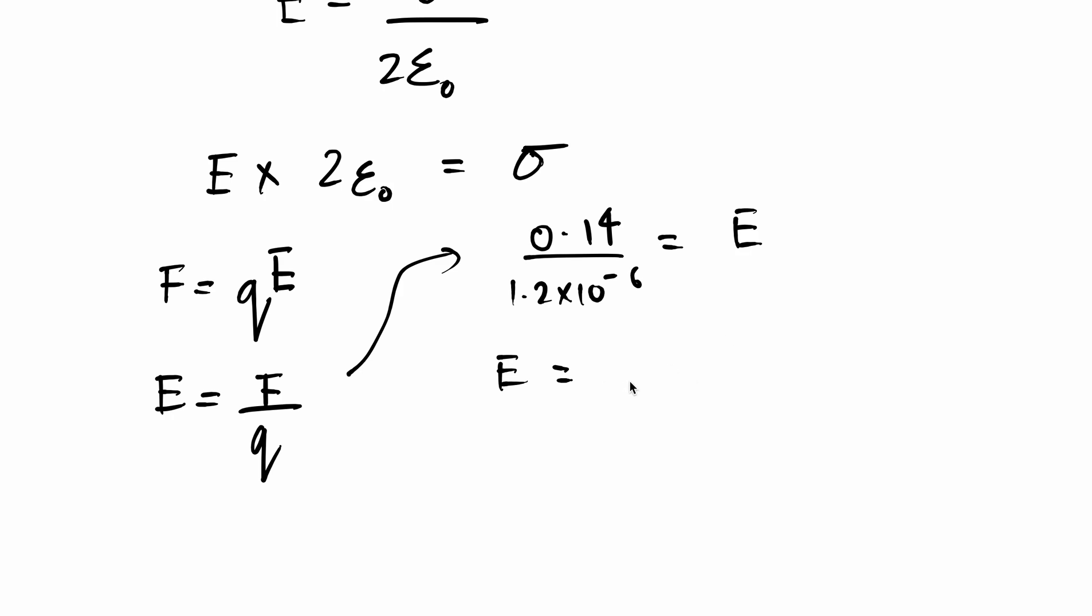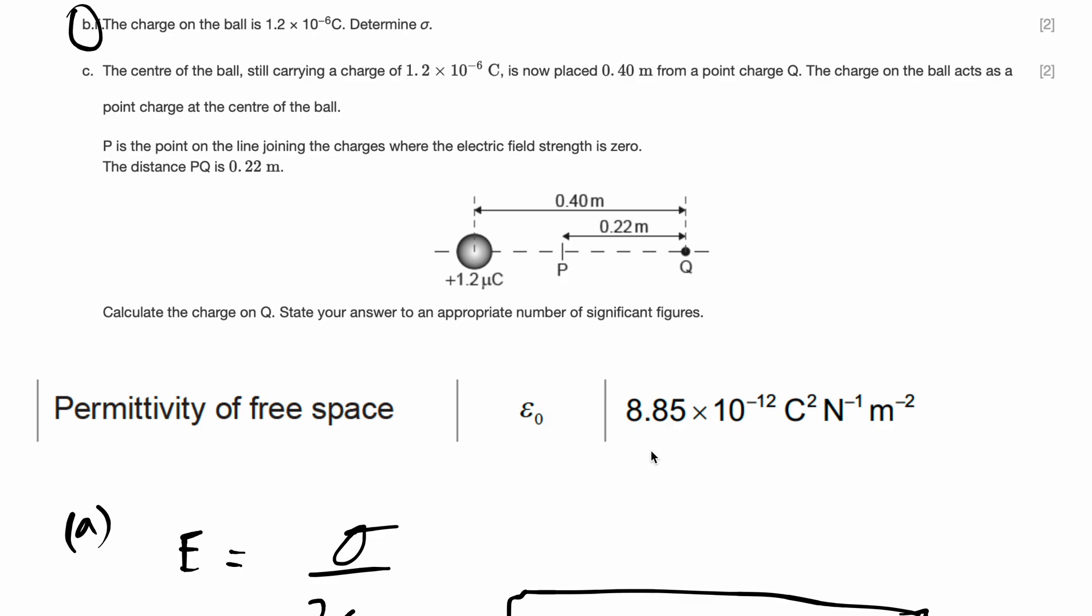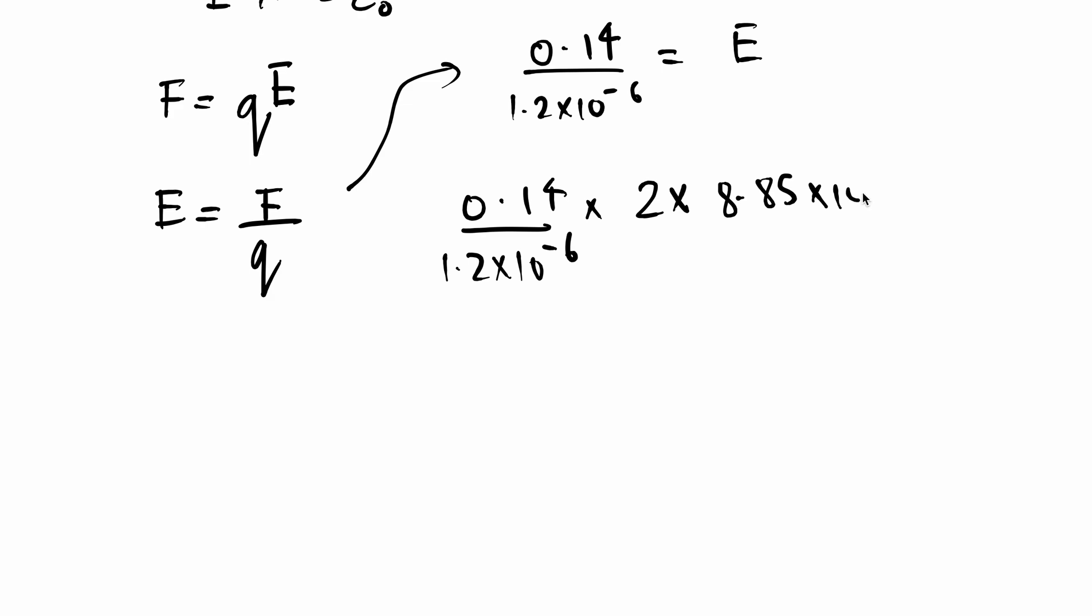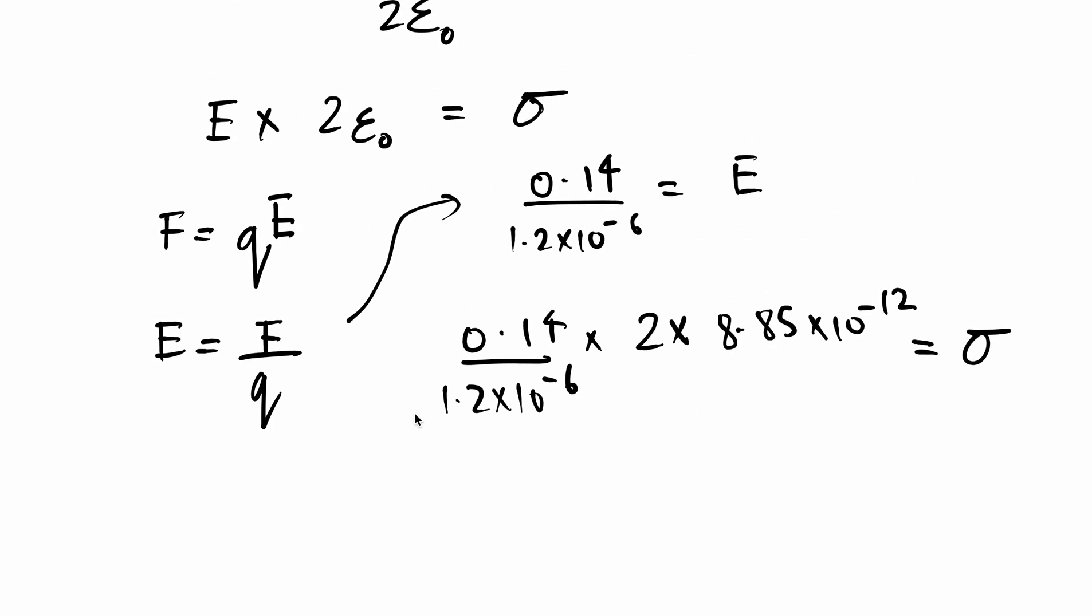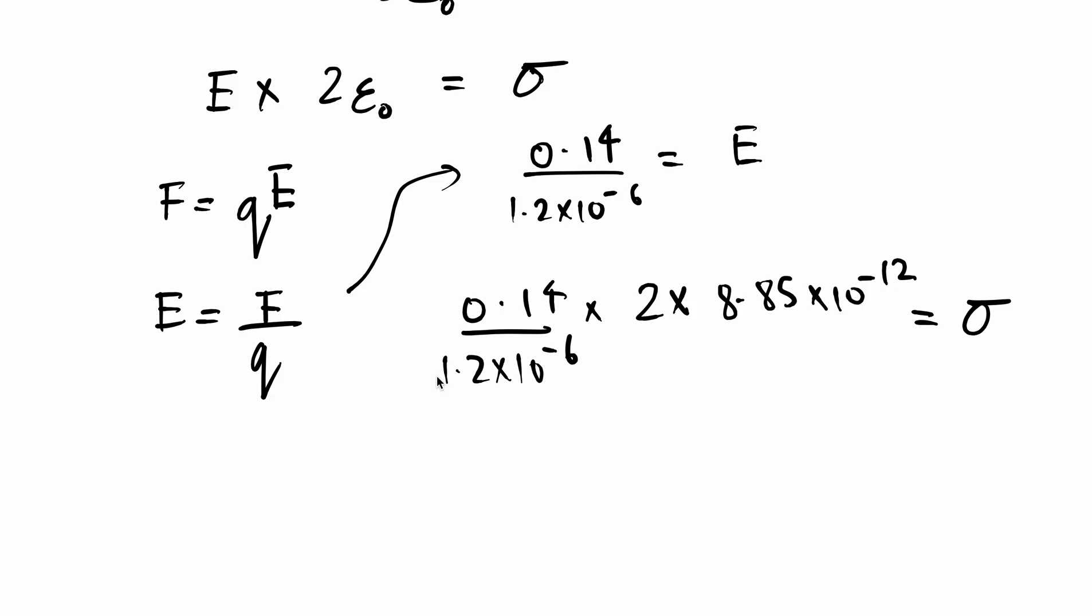So what is E equal to? If you put this on our calculator, 0.14 divided by 1.2 into 10 to the power of negative 6. It gives us some large number. Actually I don't want to put it down immediately like that. Let's just keep the overall process simple. Let's just put it all in the calculator at the end. So 0.14 divided by 1.2 to 10 to the power of negative 6 times 2 times epsilon naught which we know is 8.85 to 10 to the power of negative 12. That's equal to our sigma.